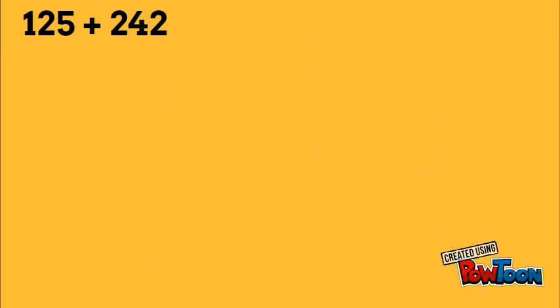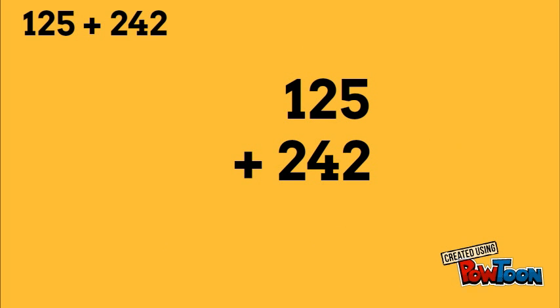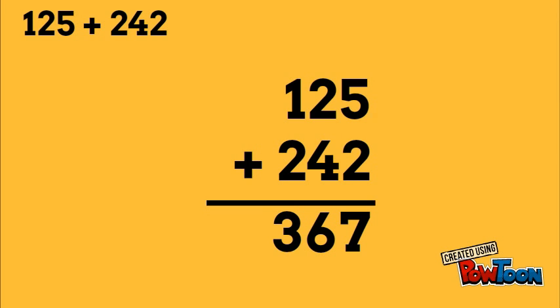Just like we lined up our base 10 blocks, we're going to line up our numbers so that their place values match. Notice the 1's is underneath the 1's, 10's is underneath the 10's, and 100's is underneath the 100's. So 5 plus 2 gives us 7, 2 plus 4 gives us 6, 1 plus 2 gives us 3. So we have 367.